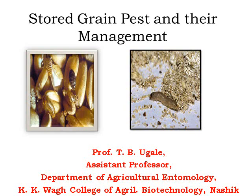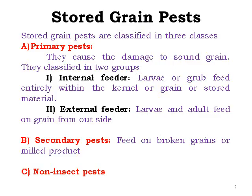Stored grain pests are the pests which feed on stored products like grains, other materials, either the processed material such as healthy powder, suji, or rawa. This is called stored grain pest. It is classified into two different types of pests.